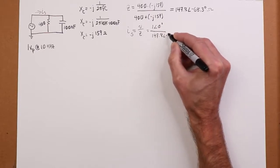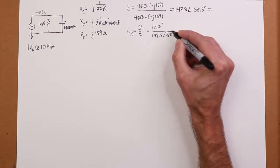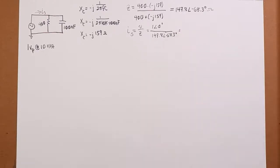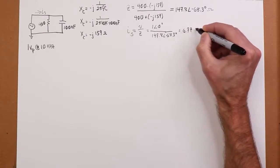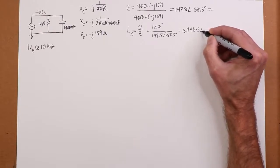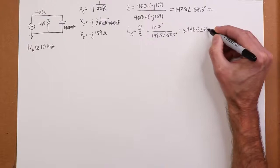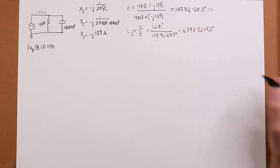divided by the impedance we just found. Of course, because we are talking about a peak voltage, obviously we have a peak value for the current. But that works out to 6.77 milliamps for the magnitude. And obviously the angle is going to be 68.3 degrees positive. So that's our current.